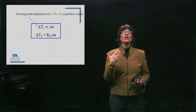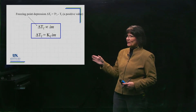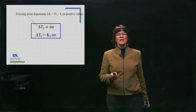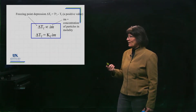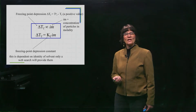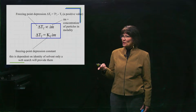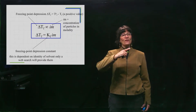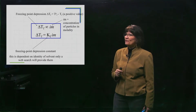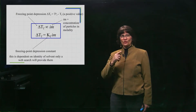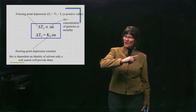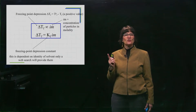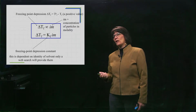The change in temperature equals K sub F times i times little m — same arrangement as before. The freezing point depression constant is dependent upon the solvent only, telling you how concentration linearly affects the change in freezing point temperature. A bigger slope means it's affected more drastically, a smaller slope means less drastically. Those are the equations for both freezing point depression and boiling point elevation.